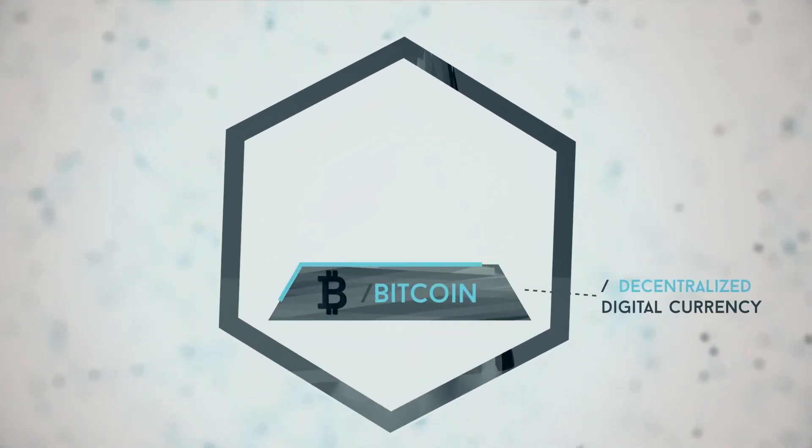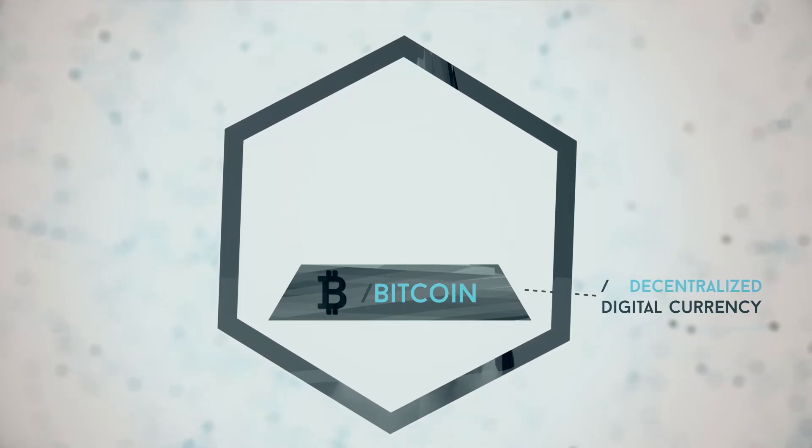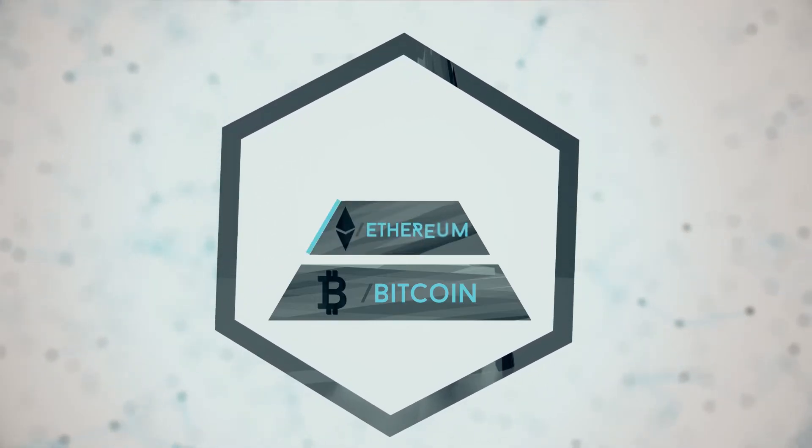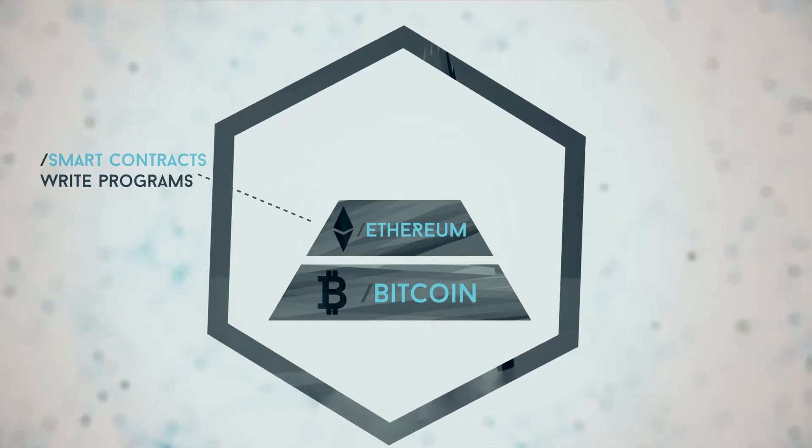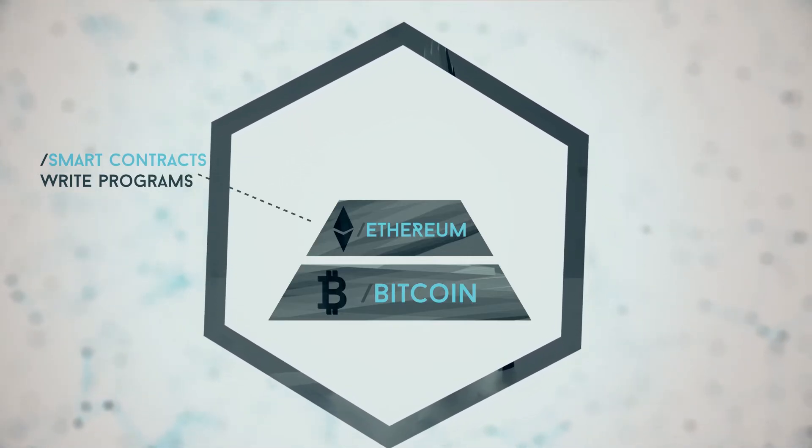Blockchain started with Bitcoin, a decentralized digital currency based on distributed ledger technology. Then entered Ethereum, which allowed developers to write programs, smart contracts, on top of what Bitcoin blockchain provides.